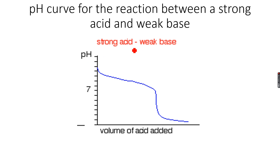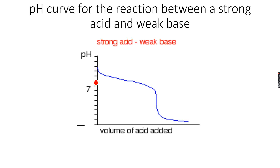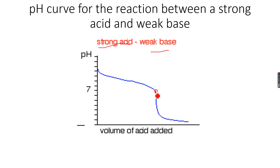Now let's look at the pH curve for a strong acid reacting with a weak base. This time I've started with the weak base, so the starting pH is much lower compared to the strong base case, because a weak base has a lower pH than a strong base. As I titrate with the same strong acid, the pH decreases very slightly at first because the base has not completely reacted. But at the steep vertical line, the base completely reacts — enough acid has been added to stoichiometrically neutralize all the base. After that point, as we keep increasing the volume of acid, we get an overall acidic pH because all of the base has been neutralized, resulting in a very low pH.